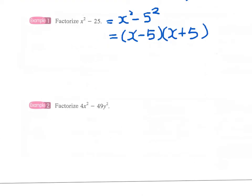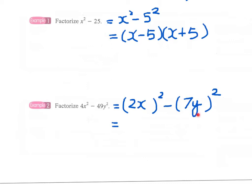Example 2: Factorize 4x squared minus 49y squared. This is a bit more difficult, but we can write it in the form of difference of two squares. 4x squared is the square of 2x, and 49y squared is the square of 7y. So this is the square of 2x minus the square of 7y, and therefore the answer is (2x minus 7y)(2x plus 7y).